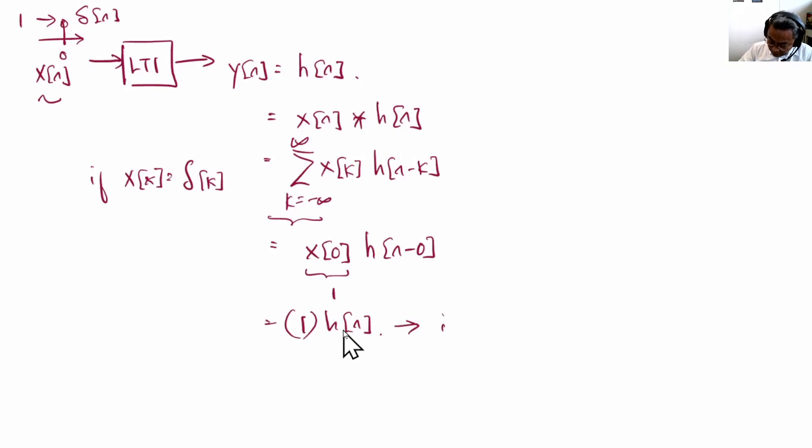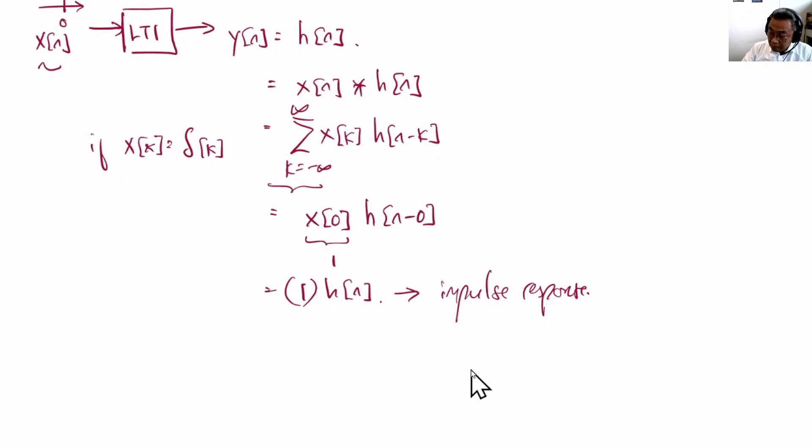So h[n] is the impulse response. Now if we Fourier transform, discrete-time Fourier transform this, we'll get H(ω), and this is called the frequency response.